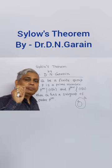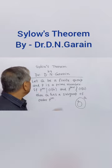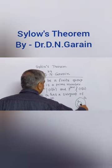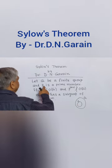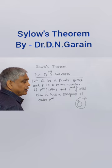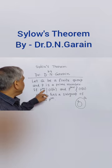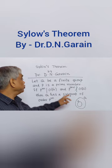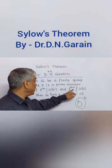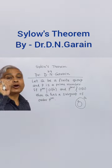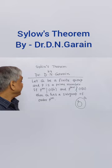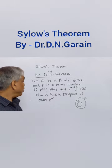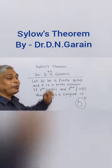Now, I will give you the concept of Sylow's theorem. Let G be a finite group and P is a prime number. If P to the power M divides the order of G, and P to the power M plus 1 does not divide the order of G, then group G has a subgroup of order P to the power M.